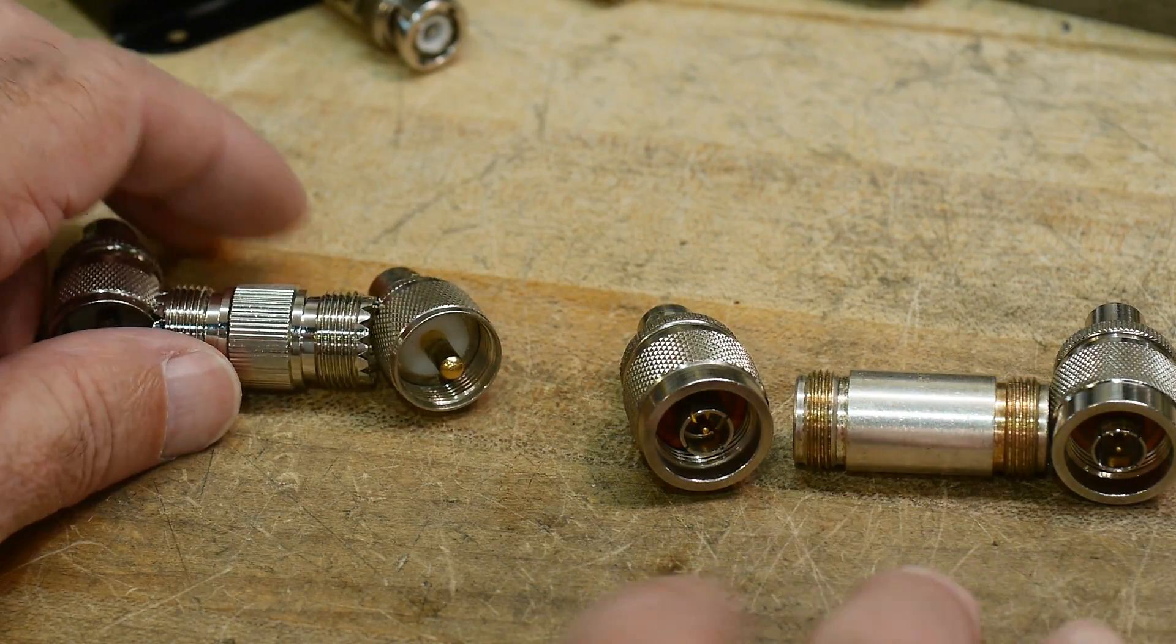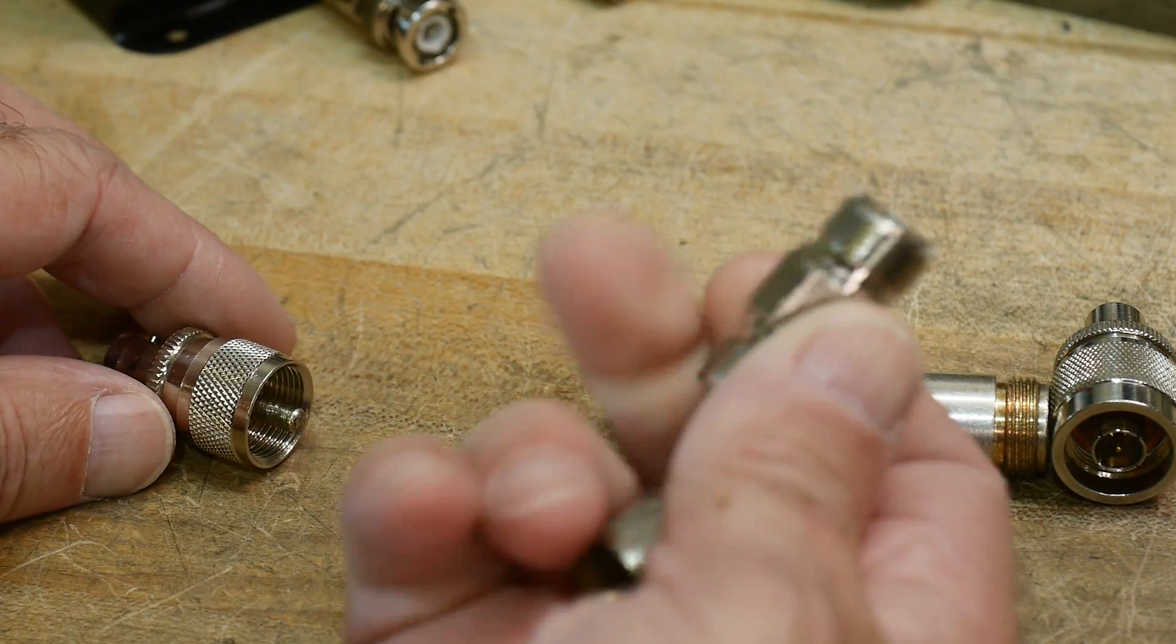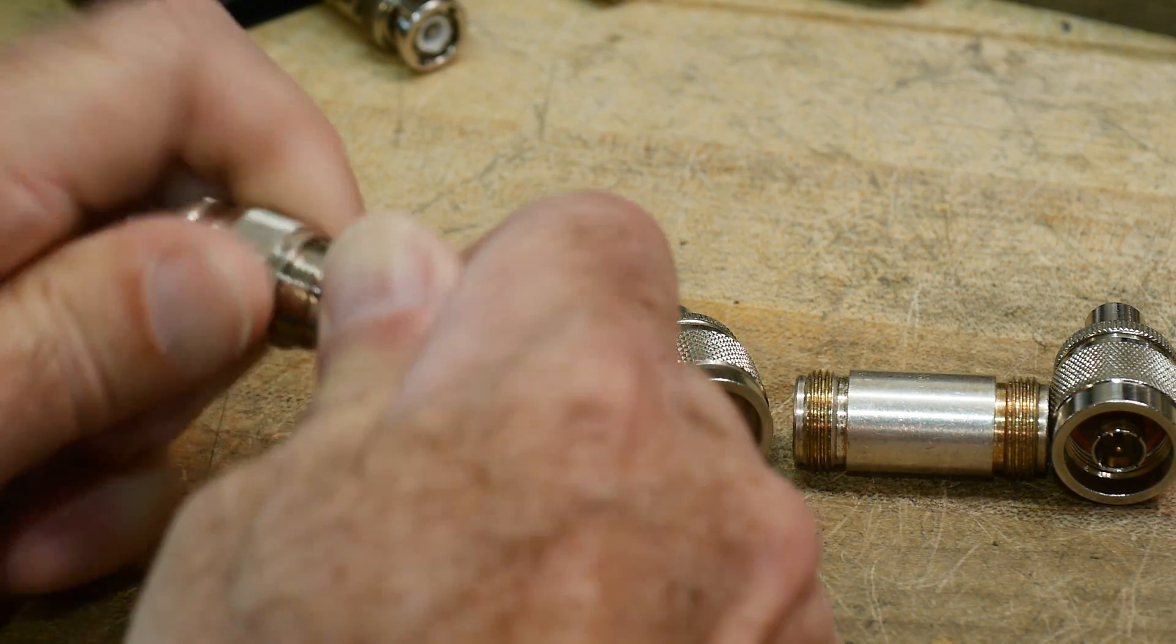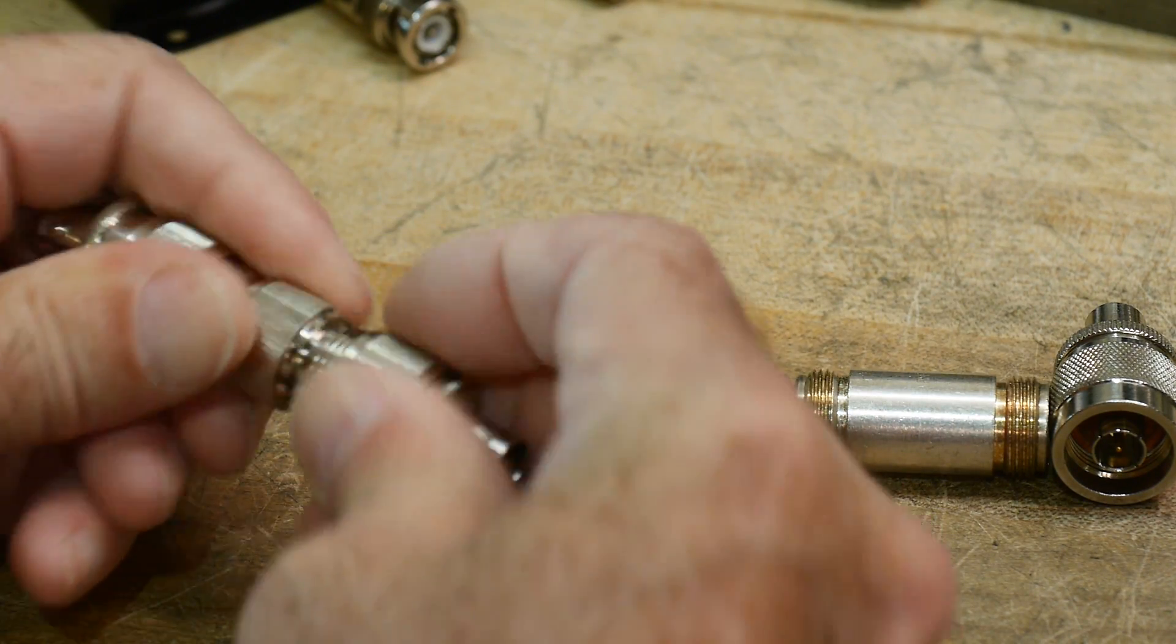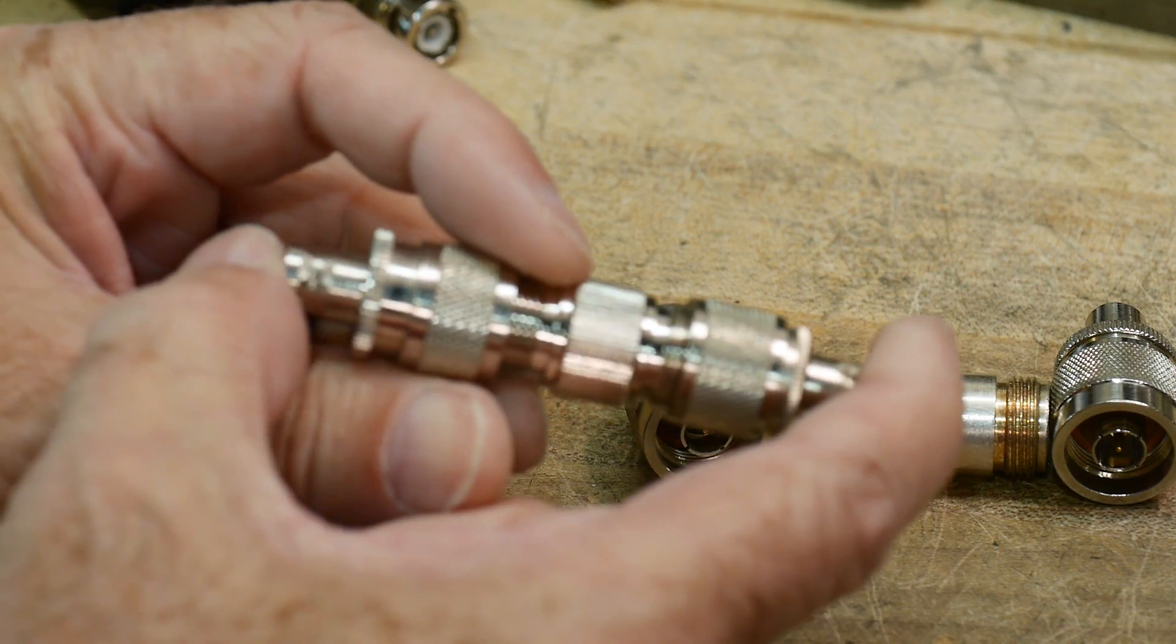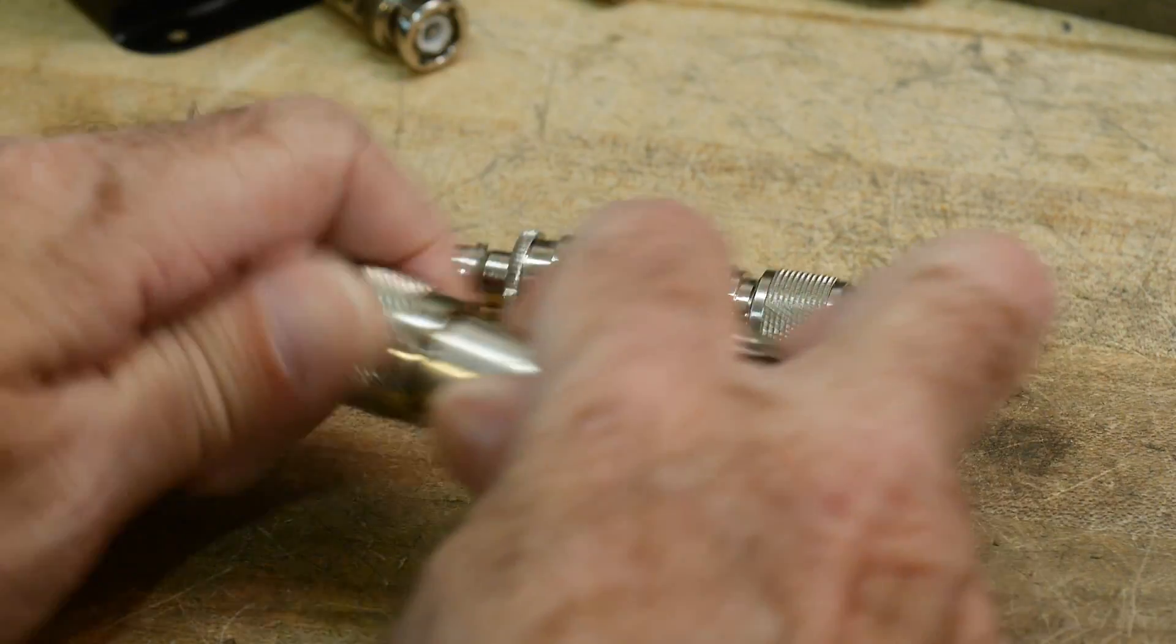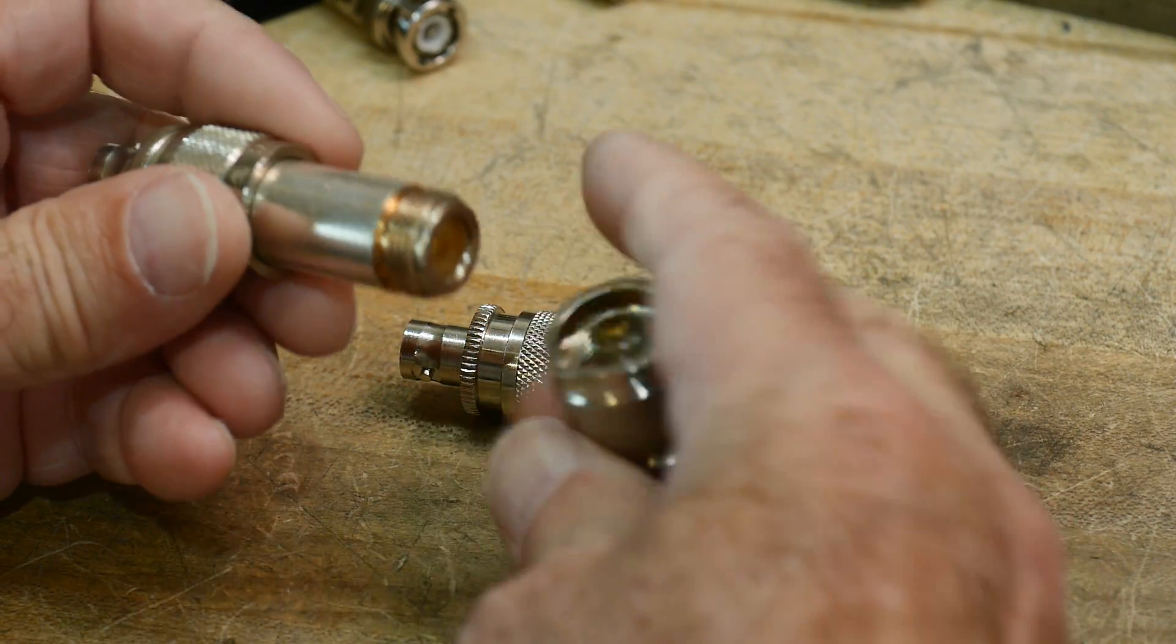And so I have matching sets here. I have male, a female, female and then another male. So I'm going to put these together like this and it turns it into a BNC to BNC. And I have the identical setup over here with N connectors.